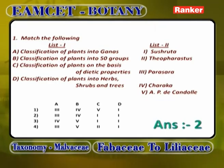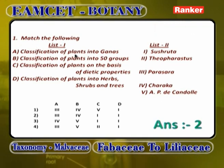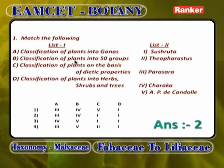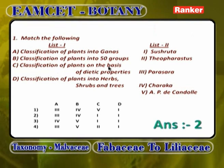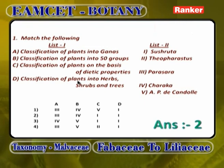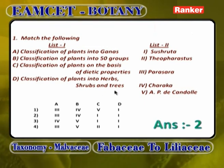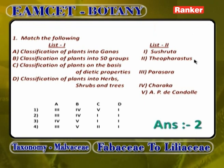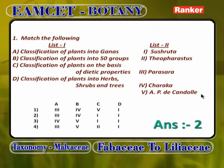First question: match the following. List 1 includes: classification of plants into ganas; classification of plants into 50 groups; classification of plants on the basis of dietary properties; classification of plants into herbs, shrubs, and trees. List 2 is: Shushruta, Theophrastus, Parashara, Charaka, A.P. de Candolle.